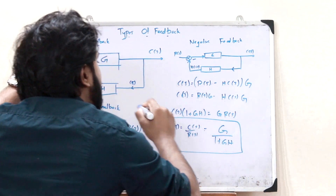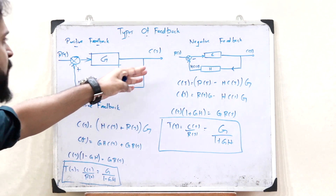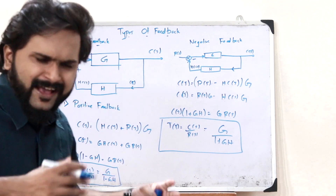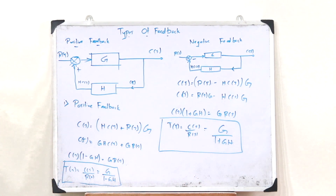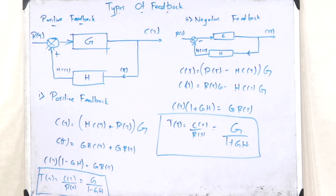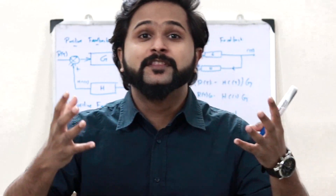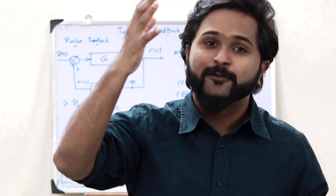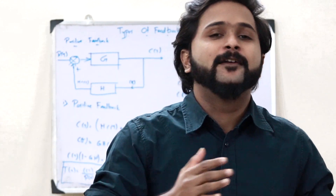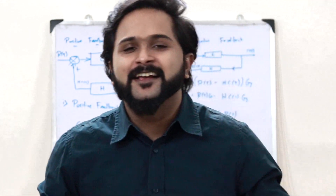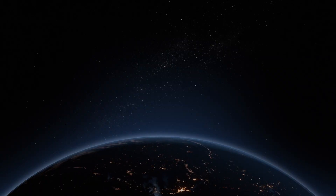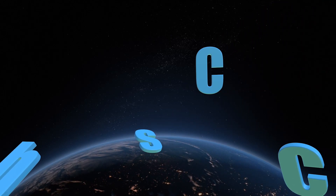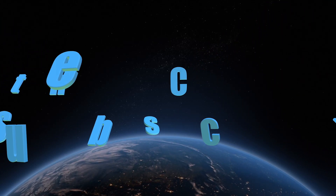This is the transfer function in the case of a system having negative feedback. So these are the two types of feedbacks that we can provide to a closed-loop control system. I hope you now have a clear understanding of what the two types of feedbacks provided in a control system are.